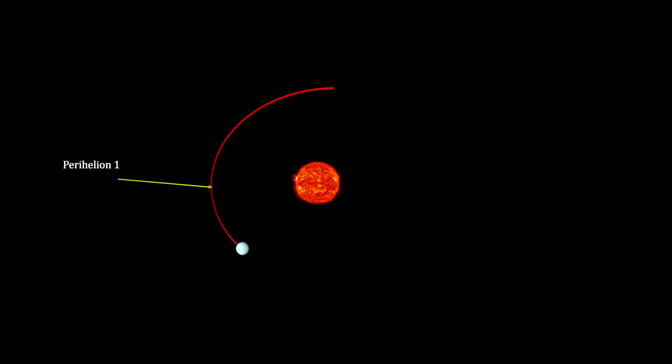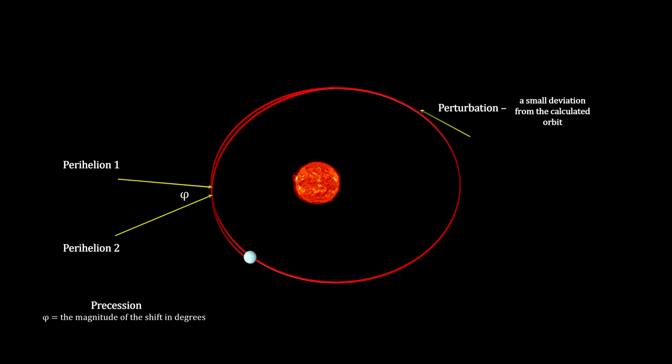By the early 1800s, it was understood that planetary orbits were elliptical with small deviations called perturbations, and that each orbit's closest approach to the Sun, called a perihelion, shifted slightly over each orbit. This is called precession.